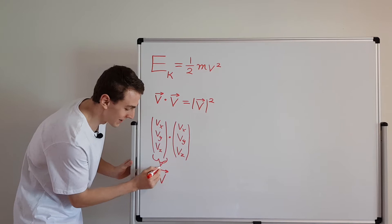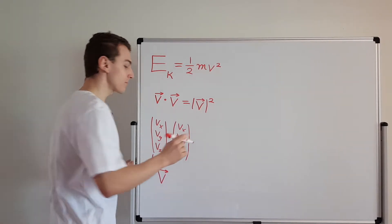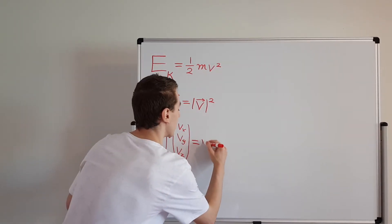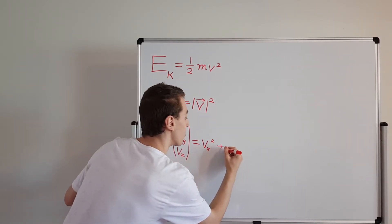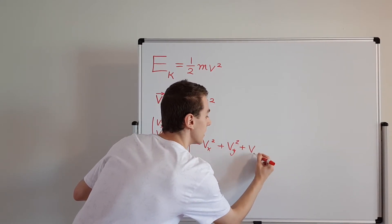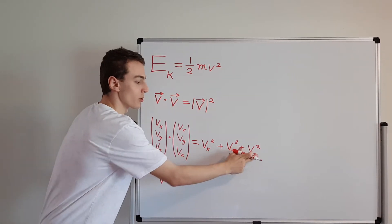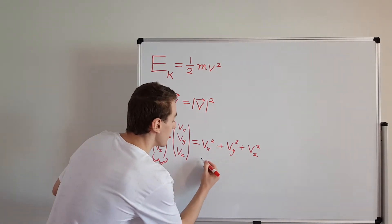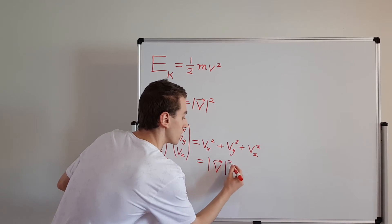So if we dot this with itself, what are we going to get? Well, Vx is going to multiply Vx, so we'll get Vx squared, and it's going to be the same for the other two components: Vy squared and Vz squared. These are the three spatial components squared together. By Pythagoras theorem we know this is just equal to the magnitude of the vector, all squared.